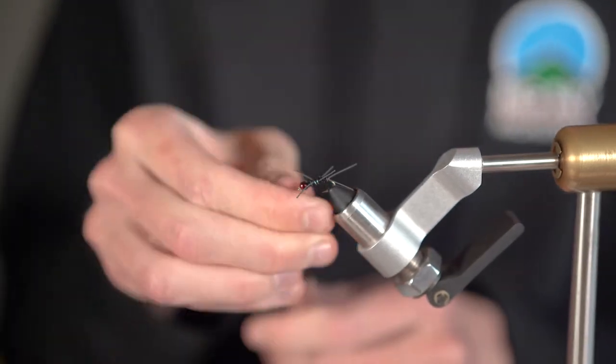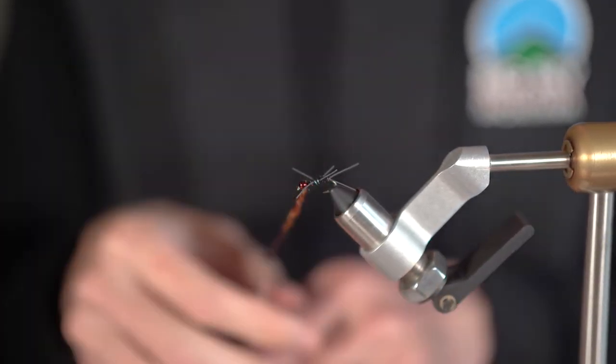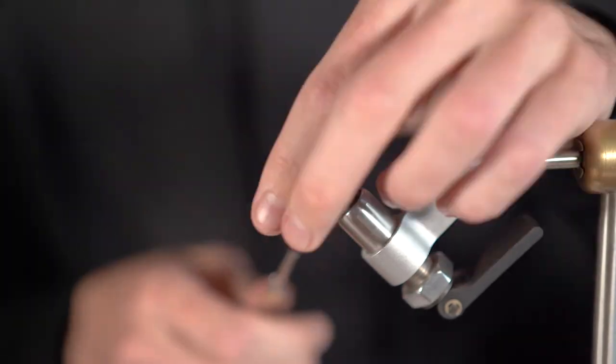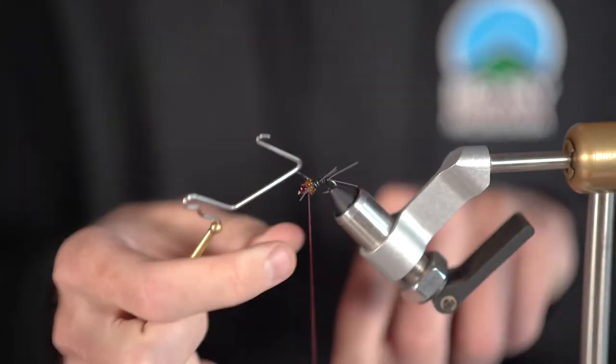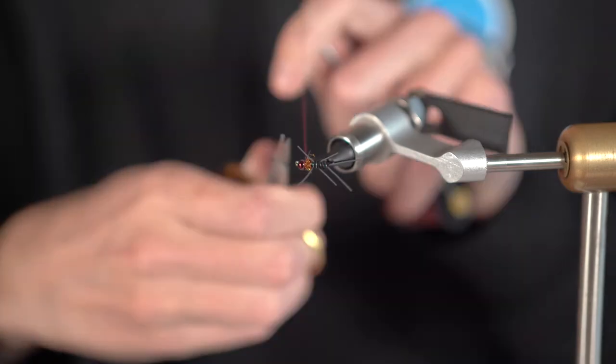Now we are on the home stretch. Grab out a small pinch of the pheasant tail ice dub and spin that onto the thread. Give it a few wraps, whip finish a few times and now you have a fly that straight up slaps.